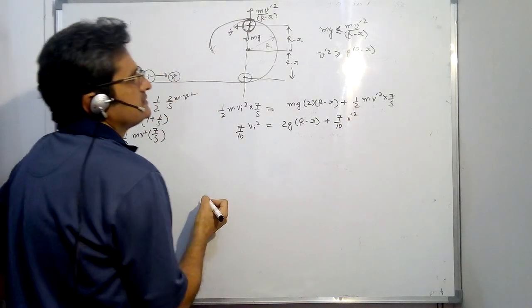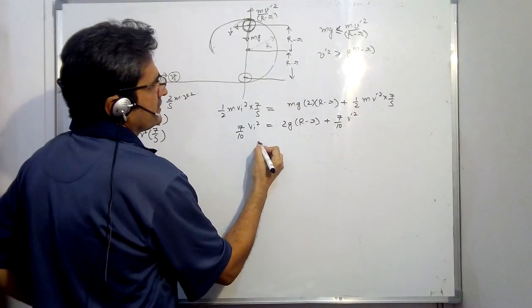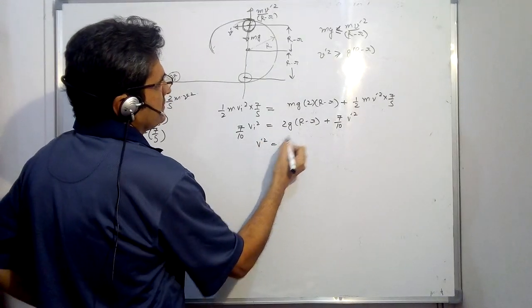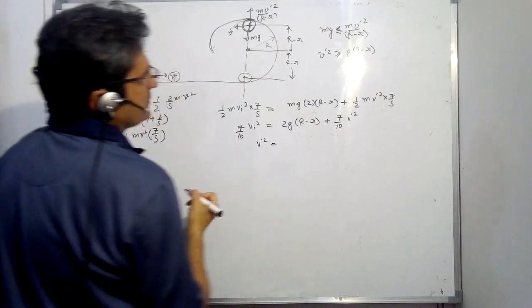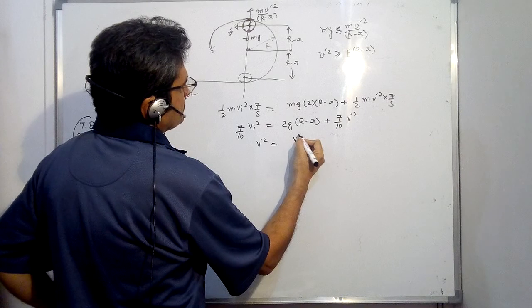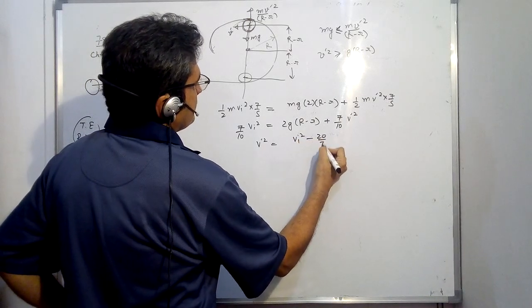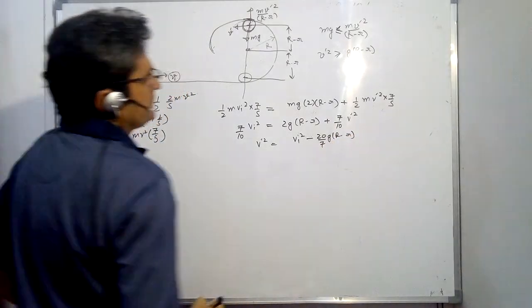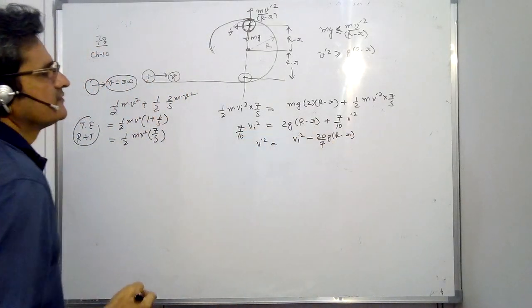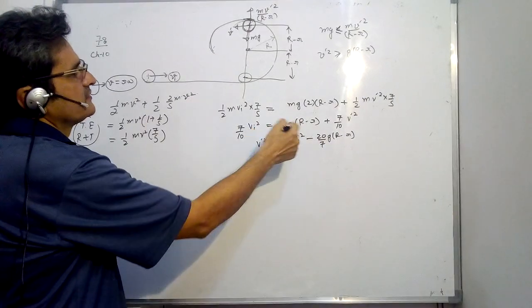Now V' square you can write, solve it further, divide by M. So it is 7 upon 10 V_I square is equal to twice G(R minus r) plus 7 upon 10 V' square. And V' square has to be greater than this. So we find V' square is how much, multiply by 10 upon 7 and just solve it. V' square is V_I square minus 20 upon 7 G into (R minus r).